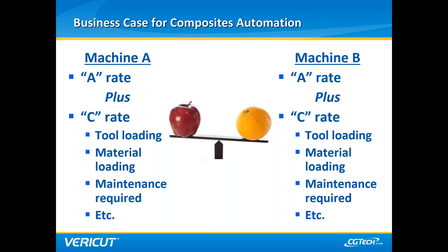Because machine builders have little control over the factors encompassed by the C rate, it would not be realistic for them to advertise it. However, the C rate most closely fits what you'll see on your shop floor, making knowledge of it essential. Given comparable A rates, machines can be down-selected based on their contribution to down or dead time — how easy a tool is to load, how quickly material can be loaded, and how often maintenance is required all affect the C rate.